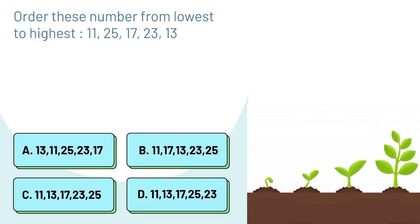Option A: 13, 11, 25, 23, 17. Option B: 11, 17, 13, 23, 25. Option D: 11, 13, 17, 23, 25. Option D: 11, 13, 17, 25, 23.